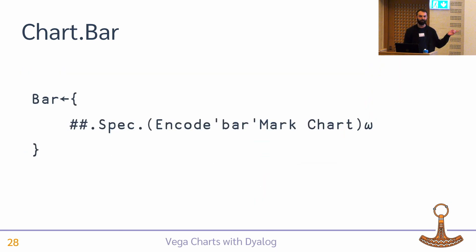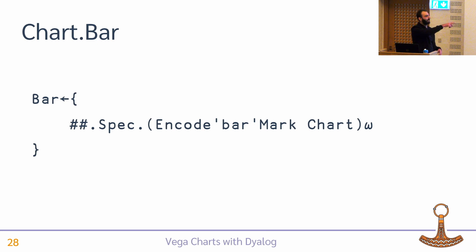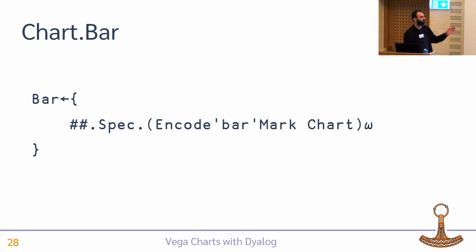Here's what the bar chart function looks like inside. There's a chart function that takes the data, does the quad CSV, injects it into the spec, and returns the namespace. The mark function sets chart.mark to bar, which is fairly trivial, but the left argument can be JSON5 text or a namespace adding additional parameters to the mark type. There's also the monadic encode function — in the monadic case it does the default encoding, but if you provide a namespace or JSON5 left argument you can modify it.